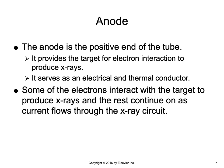The anode is the positive end of the tube and it provides the target for the electron interaction to produce x-ray photons; it is an electrical and thermal conductor. Electricity flows through the x-ray tube, and the electrons flowing from cathode to anode are part of that flow. Some electrons interact with the target to produce x-rays, and then the rest continue as current flow through the x-ray circuit. A tremendous amount of heat is also generated during the process, and the anode is designed to dissipate this heat.